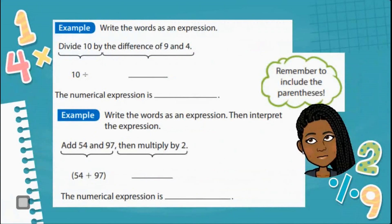In today's lesson, I want you to write the words as an expression. Divide 10 by the difference of 9 and 4. Well, if we reviewed our words, what does difference mean? When I tell you to find the difference of two numbers, what are you going to have to do? Well, you're going to have to subtract, right? So that's telling me I'm going to have to subtract 9 and 4 first. And then it says divide 10 by the difference. So the numerical expression is 10 divided by 9 minus 4. Remember to include your parentheses. Why? Because the parentheses will tell you how to solve it, right, in the correct order. It tells you where to start.